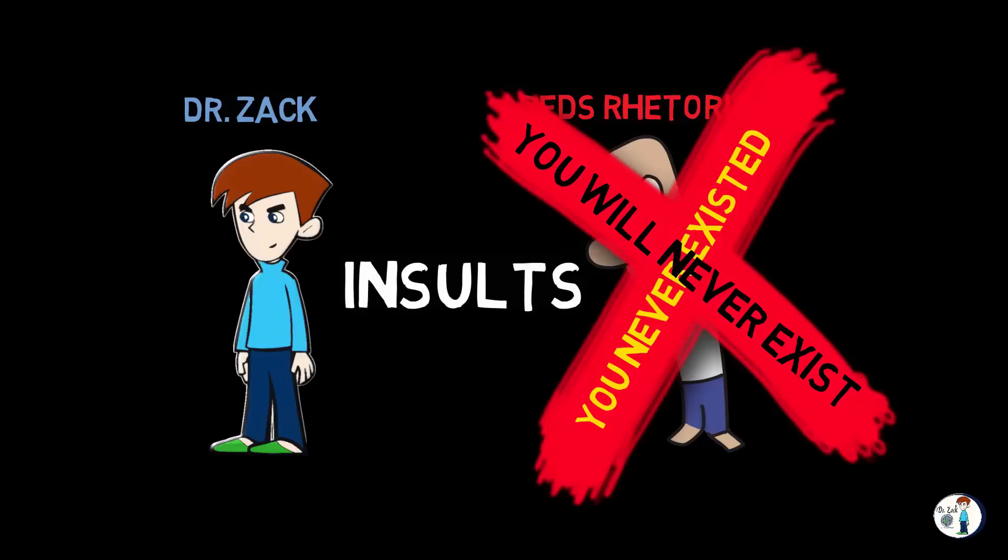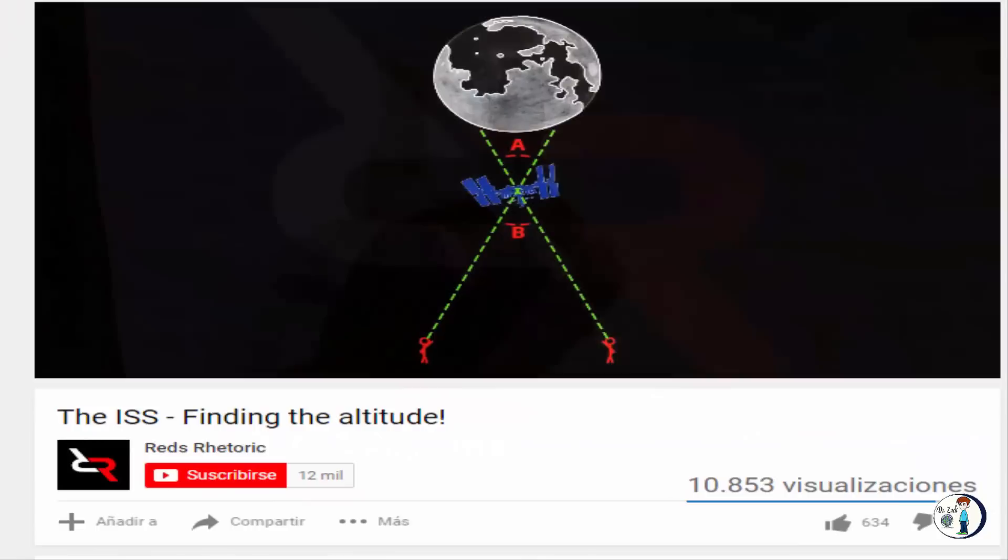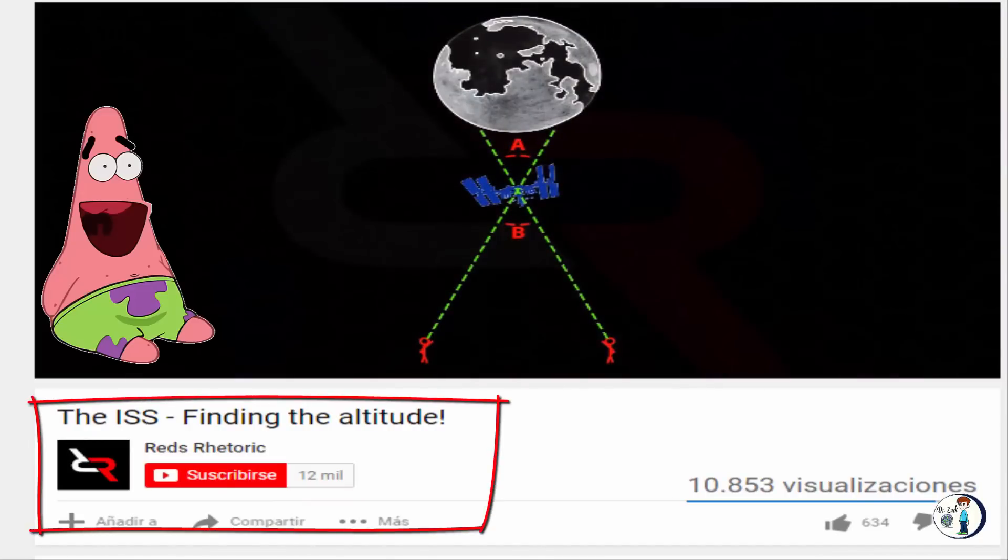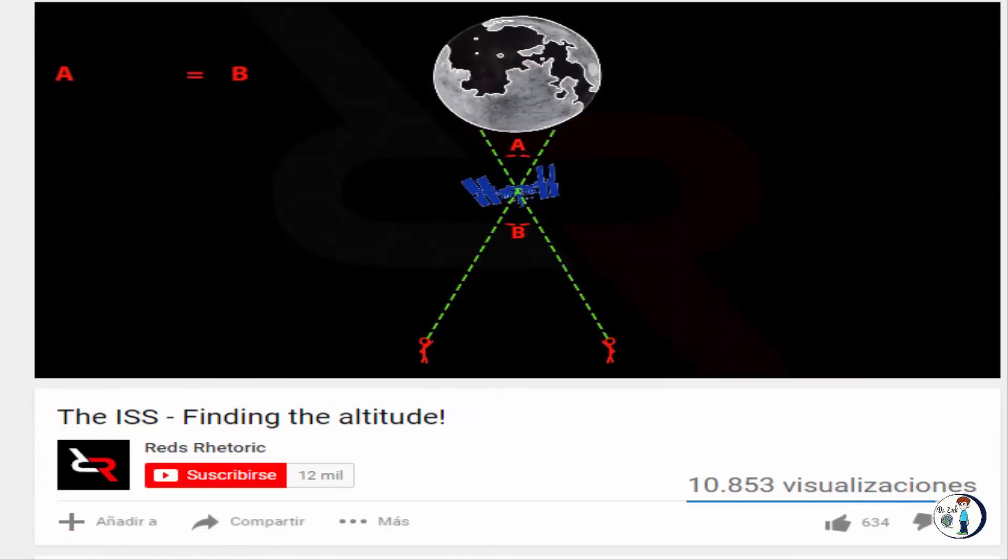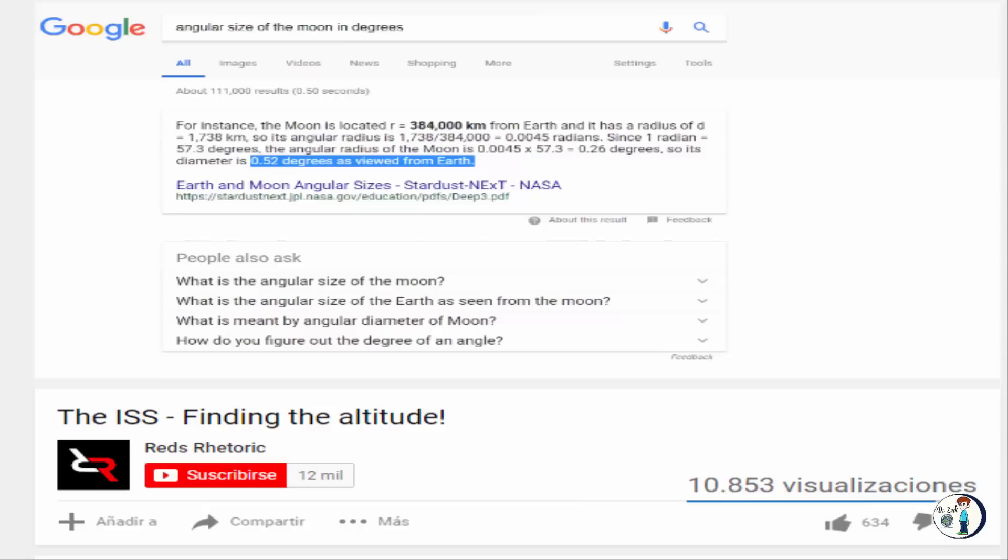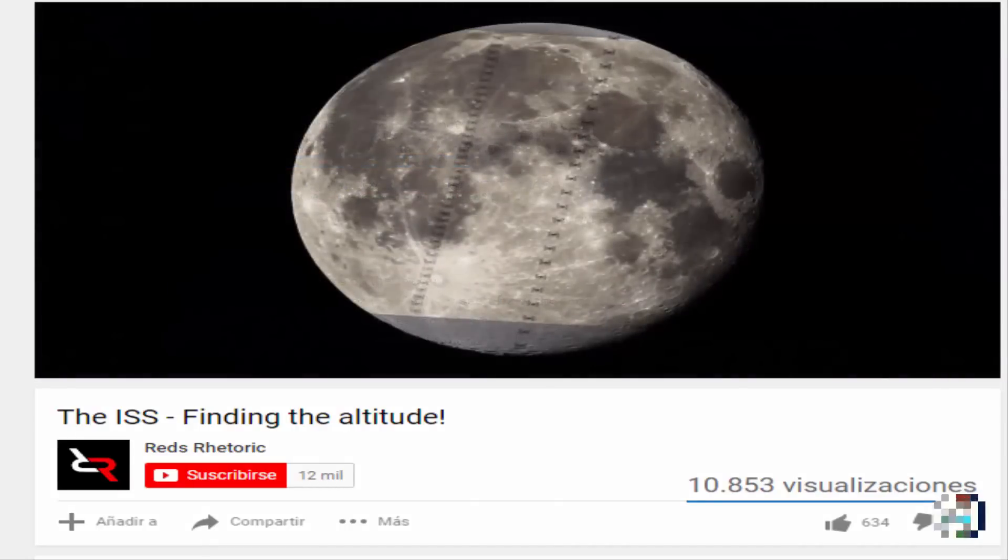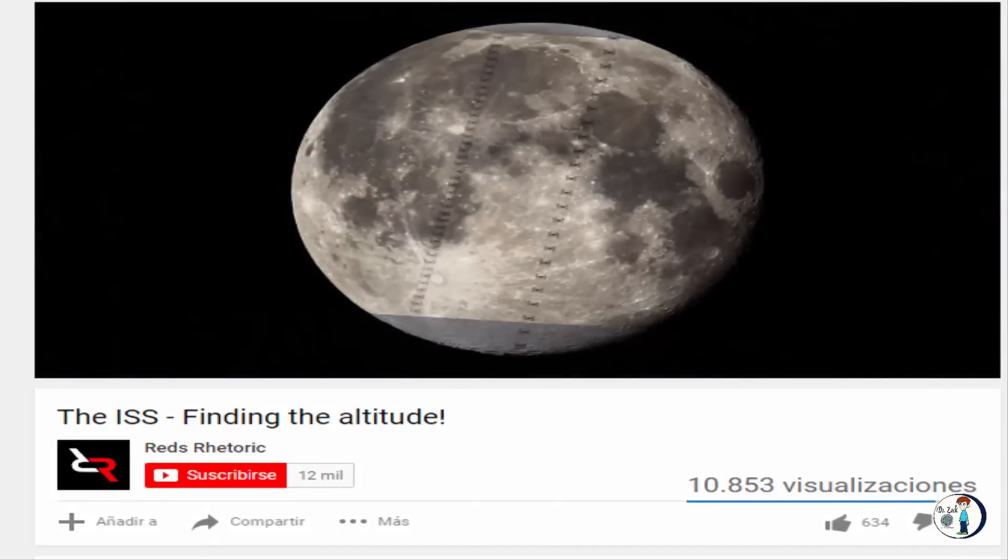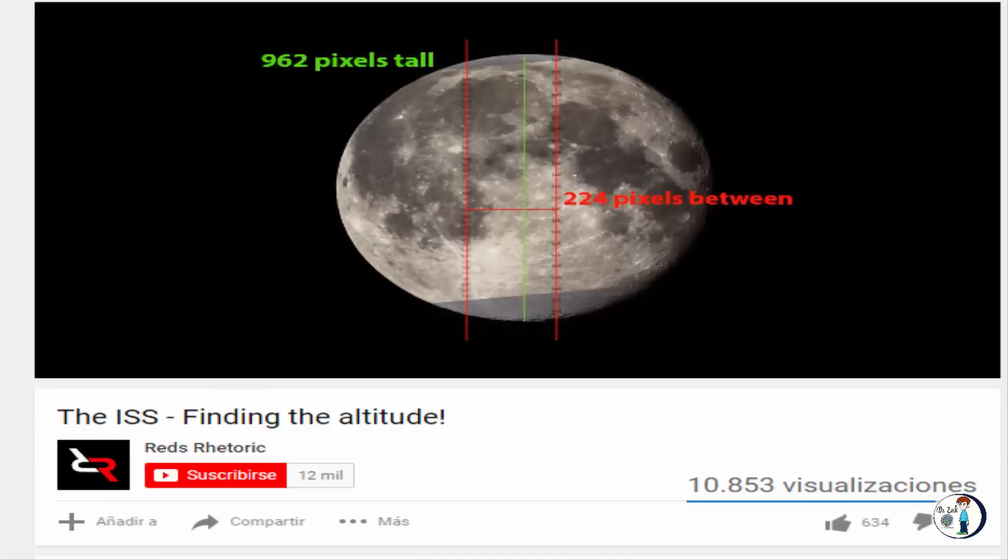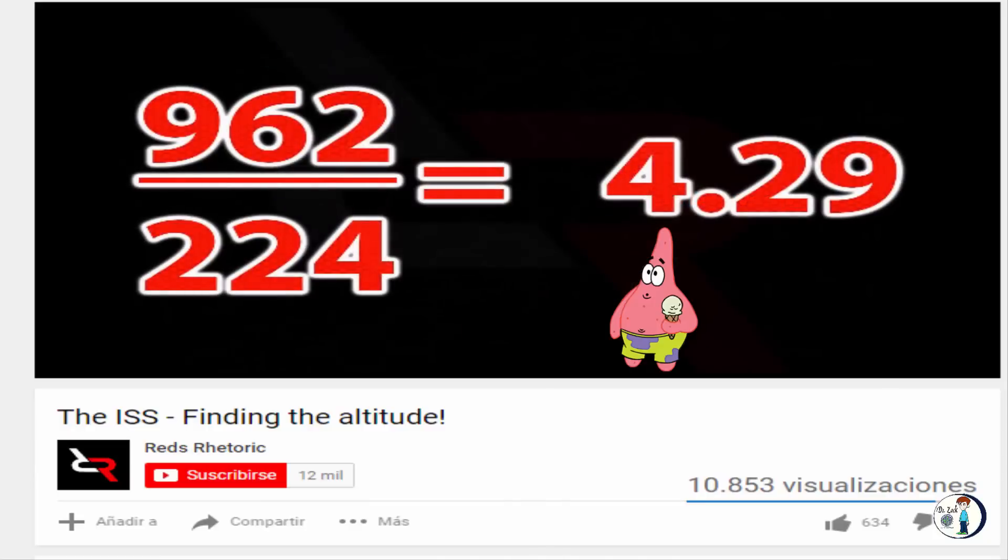Now let's watch a little bit of his video. The first thing we need to do is find angle A on our diagram. Since angle A equals angle B, we can knock out two birds with one stone. The angular size of the moon is about 0.52 degrees wide as seen from Earth. If we overlay our two tracks together, the pixel diameter of the moon is about 962 pixels wide. The span of our two tracks from center to center is about 224 pixels wide. If we divide 962 by 224, we get a ratio of 4.29 to 1.